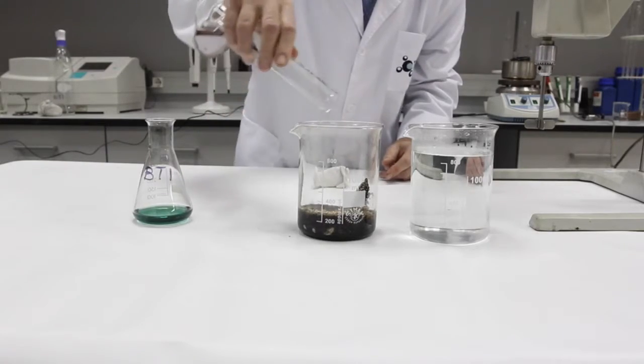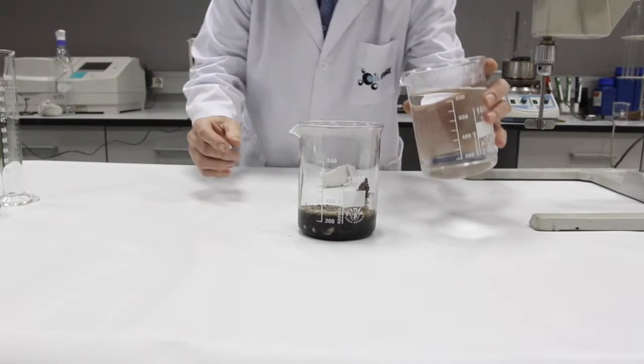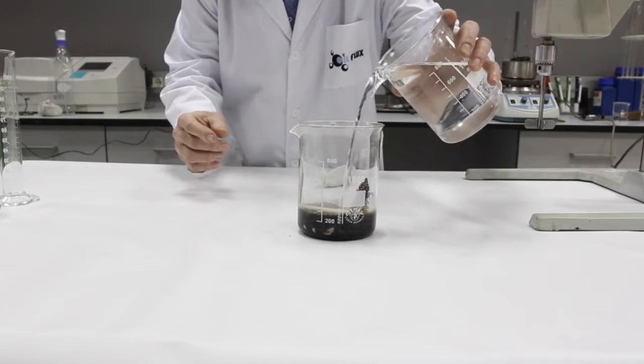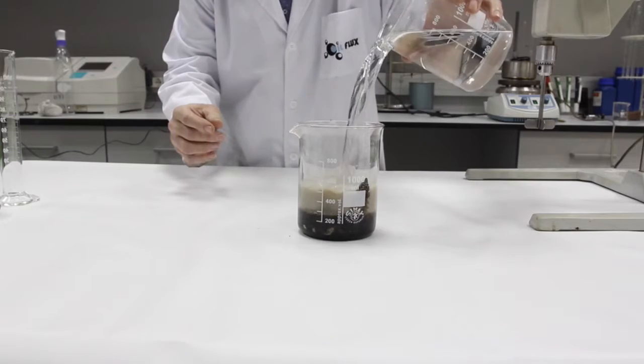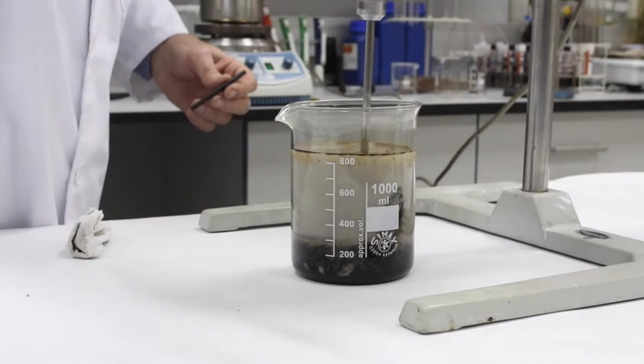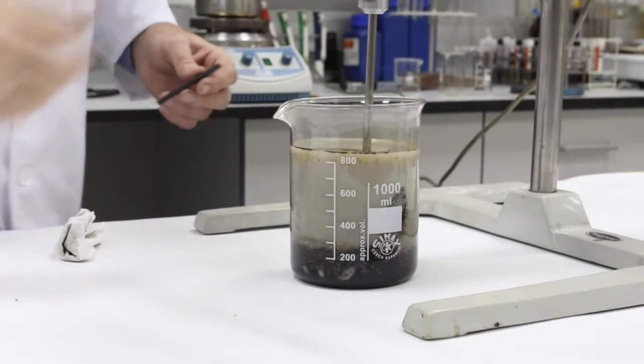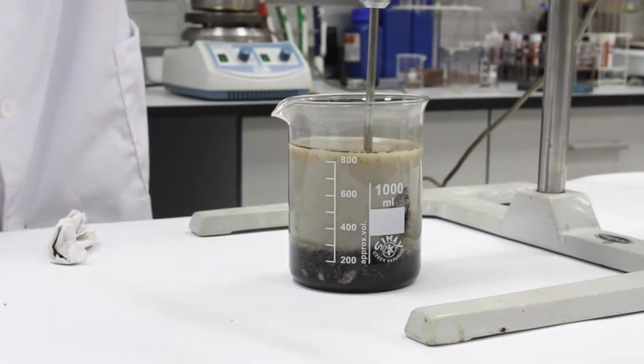Since the beaker has a capacity of 800 milliliters, the lab technician proceeds to pour 40 milliliters of BTI and fill it with warm water. The emulsion formed is agitated at 500 rpm for about 20 minutes.